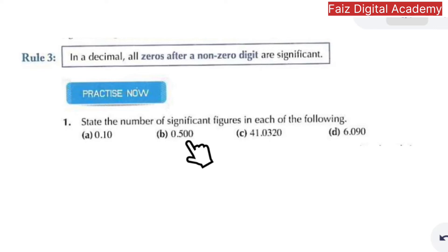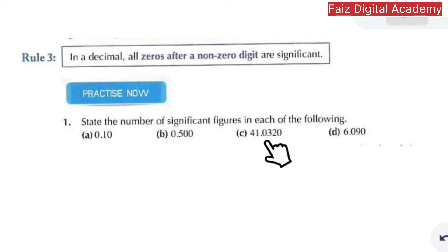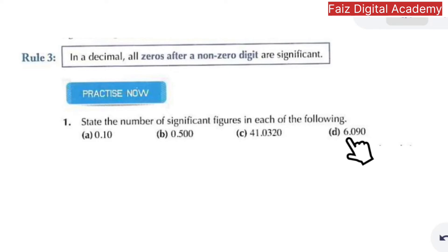Similarly, 0.500 has three significant figures because the two zeros come after a non-zero digit. In part c, 41.0320 has six significant figures: all six digits are significant numbers.